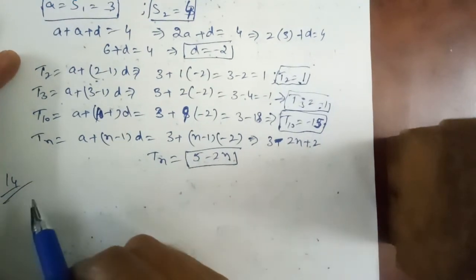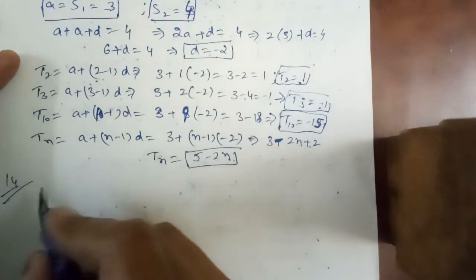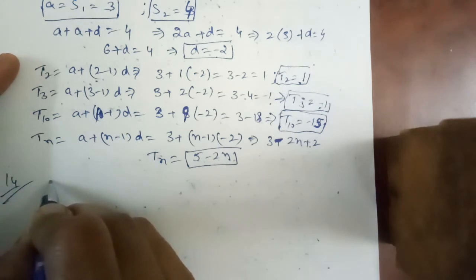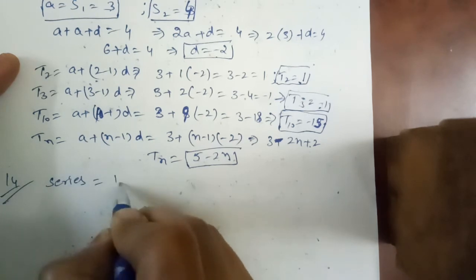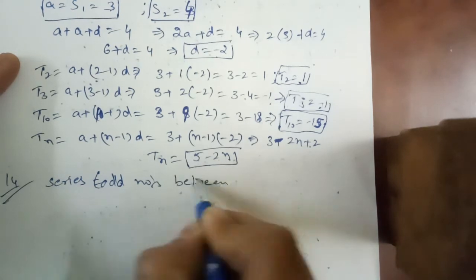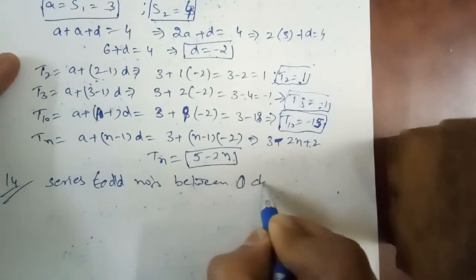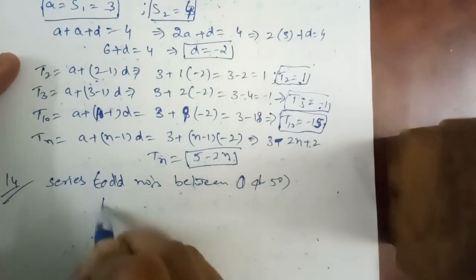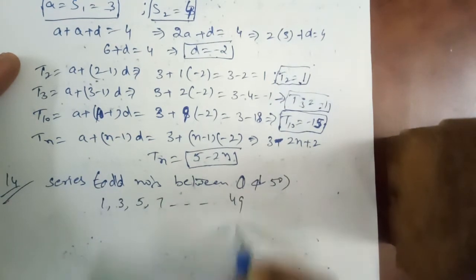Next doubtful question is fourteenth. Find the sum of odd numbers between 0 and 50. Odd numbers between 0 and 50, if you write the series you can easily understand: 1, 3, 5, 7 goes up to 49. This is L.